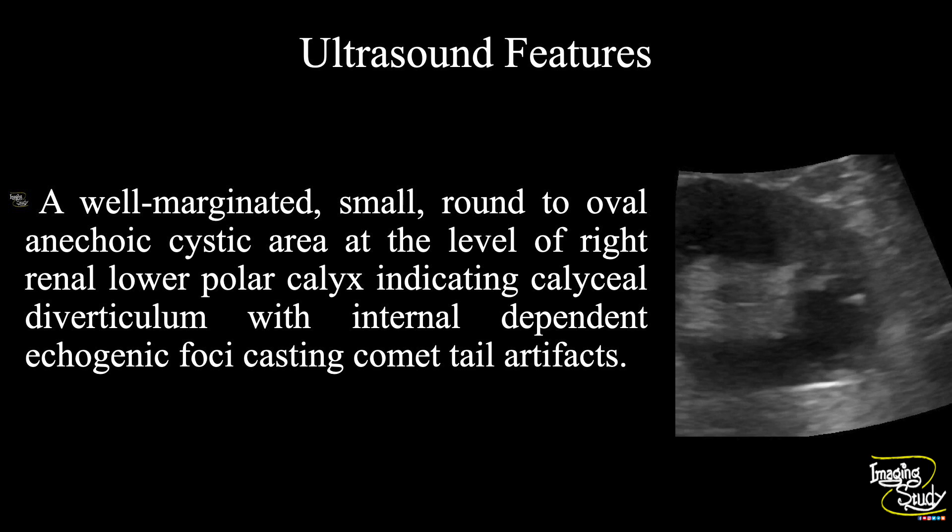So in summary, a well-marginated small round to oval anechoic cystic area is noted at the level of the right renal lower polar calyceal system, indicating a calyceal diverticulum with internal dependent echogenic foci casting comet-tail artifacts, indicating this as a case of renal milk of calcium cyst.